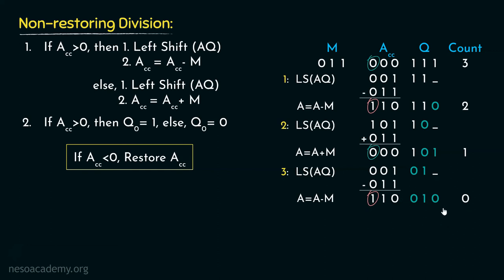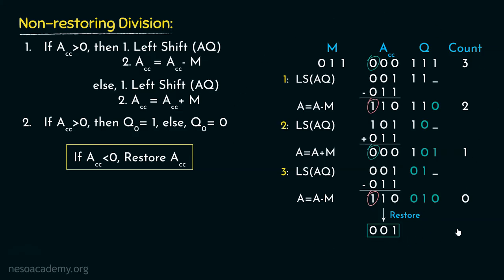We have now achieved our quotient, which is 2. However, the content of the accumulator is still negative. We know that by the time the count reaches 0, if the accumulator content is still less than 0, we are supposed to restore it. So if we restore it, it becomes 001. This is because before the final subtraction was performed, the content of the accumulator was 001. This is the remainder. Basically, 7 divided by 3 gives a quotient of 2 and a remainder of 1. We only had to restore the contents once, at the very end.